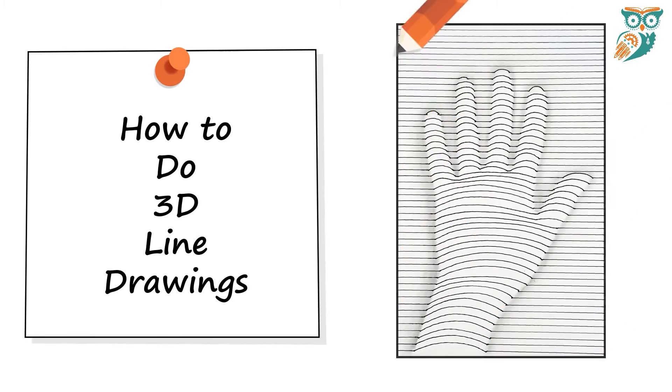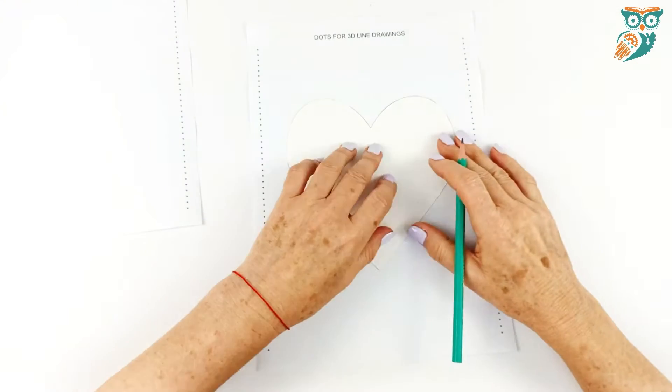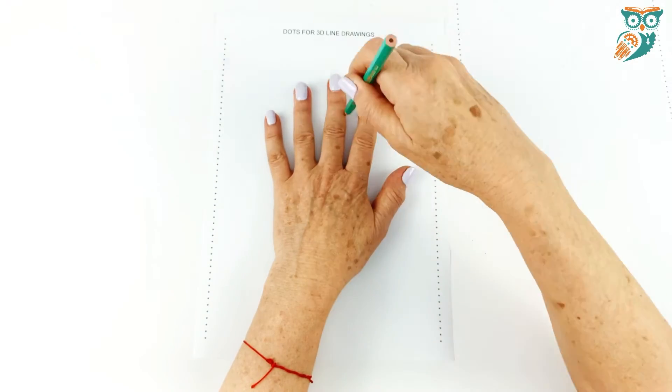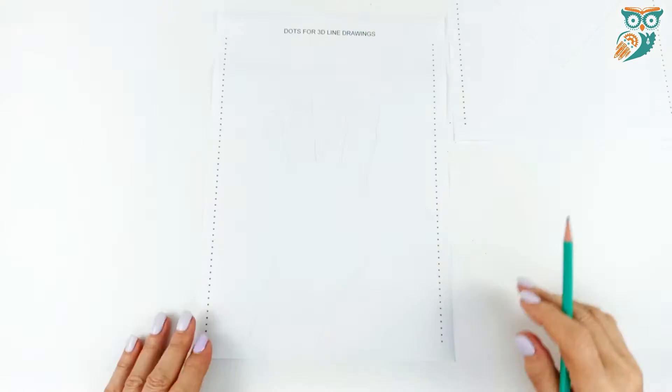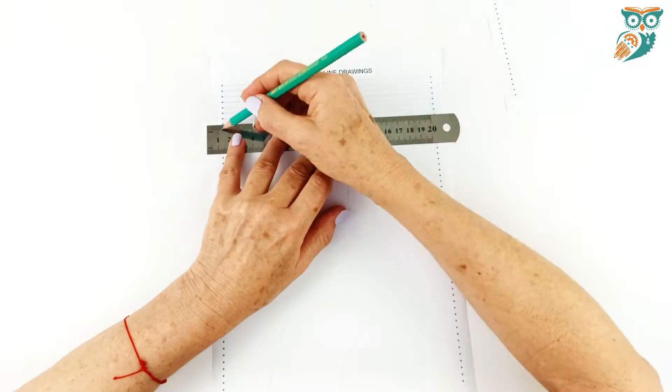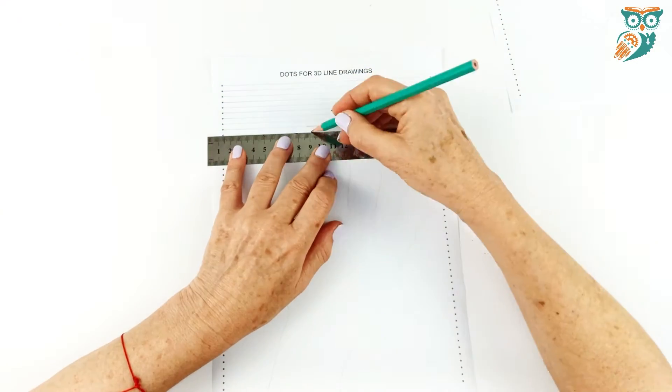Now we're going to do line drawings. Now these are really spectacular because they start out looking very normal but then they kind of just like magic seem to pop up off the page. So we've got paper there and you can see the dots. So we did our tracing first of a heart and then our hand.